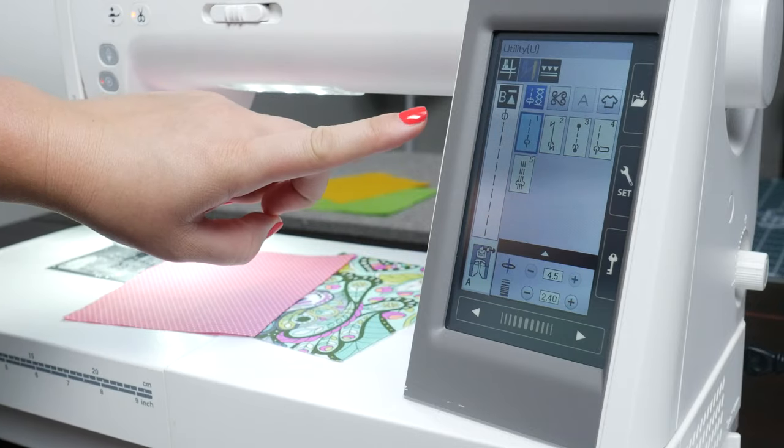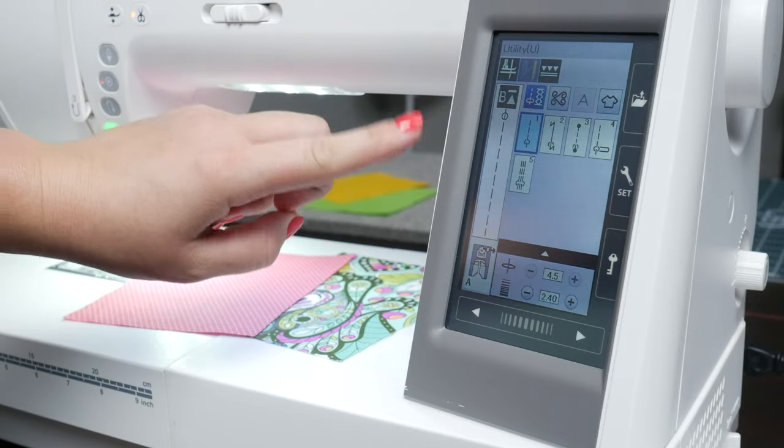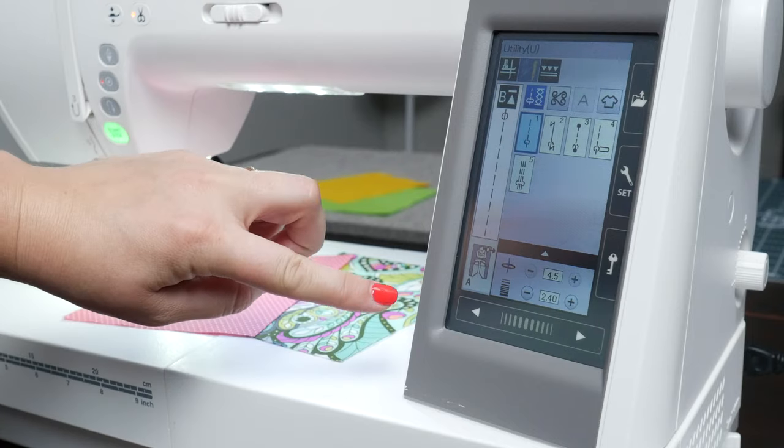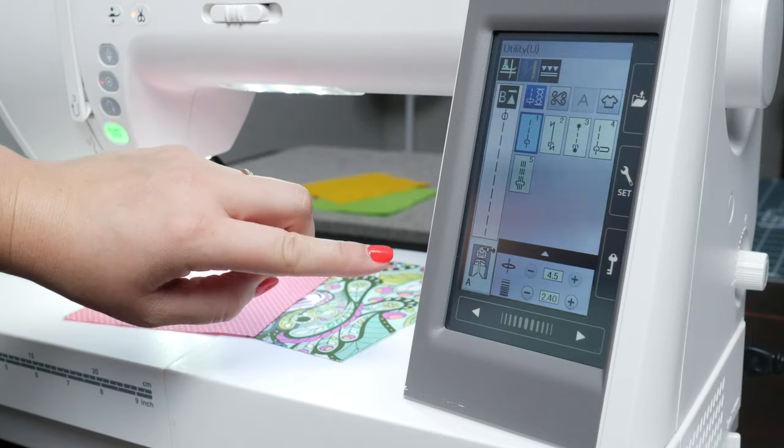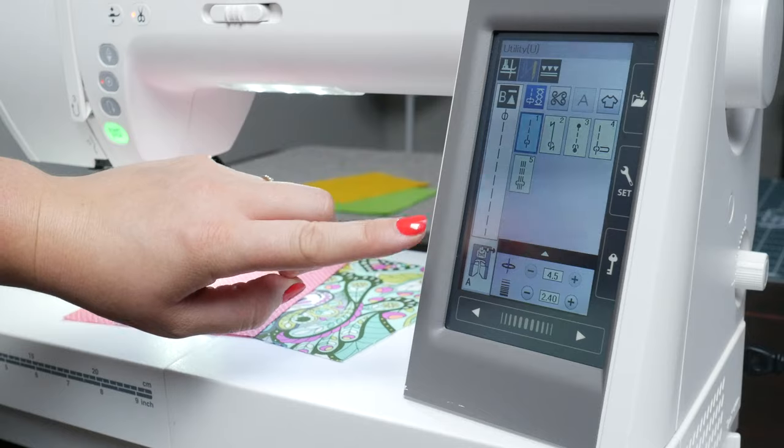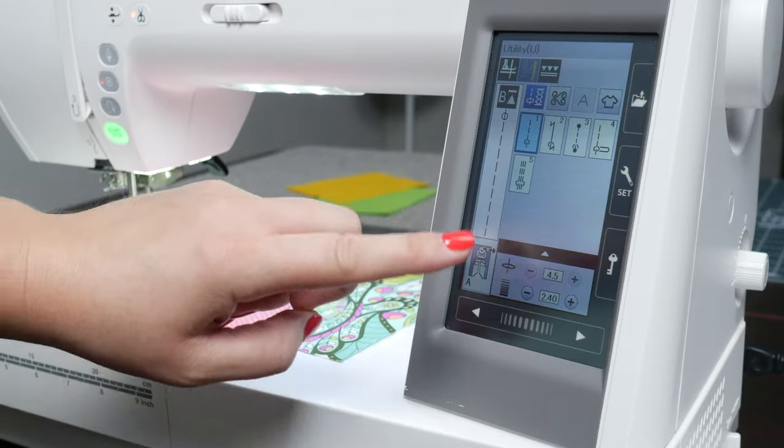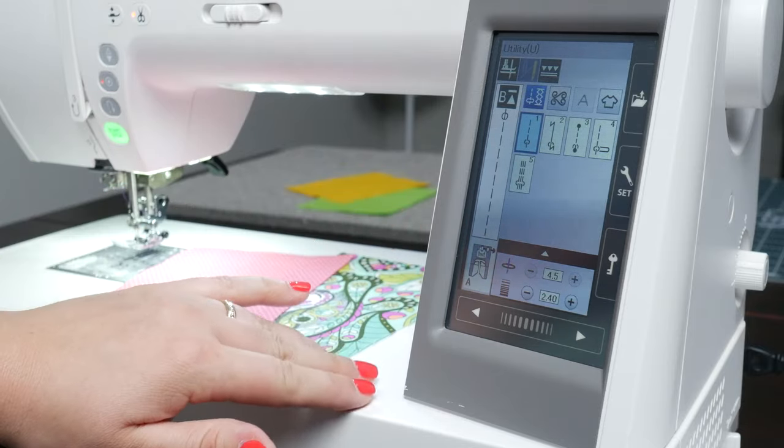Some machines will have a sensor that will tell you when the straight stitch plate is on your machine and then it'll do the thinking for you. It won't allow you to select any stitches that entail the needle moving back and forth because the opening is not big enough.